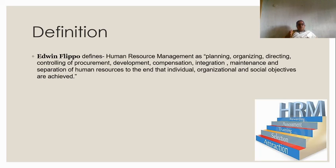Modern definition — Edwin Flippo defines human resource management as planning, organizing, directing, and controlling of procurement, development, compensation, integration, maintenance and separation of human resources to the end that individual, organizational and social objectives are achieved.